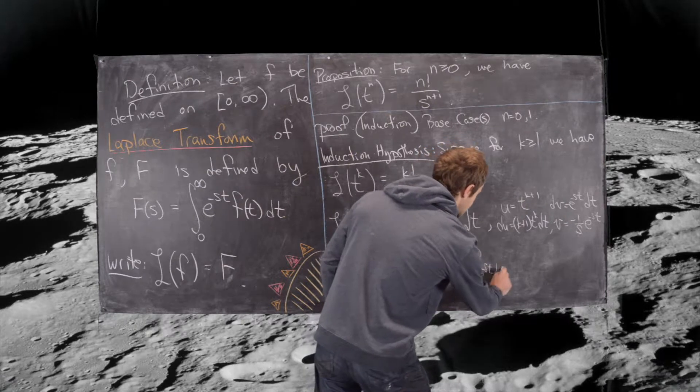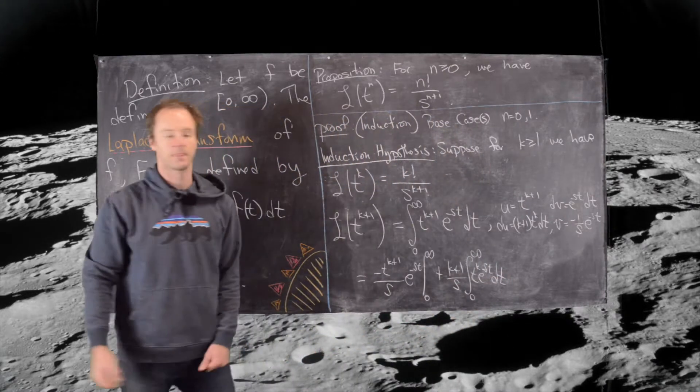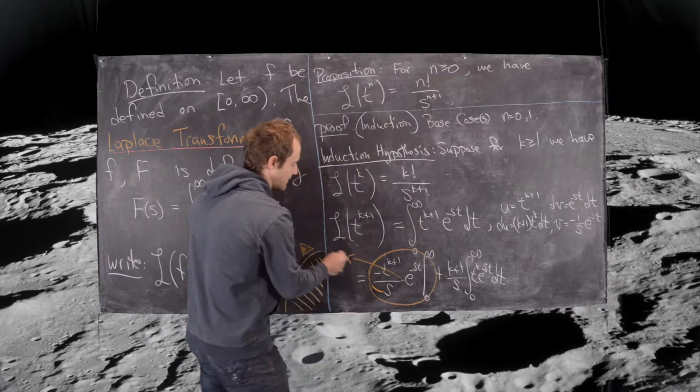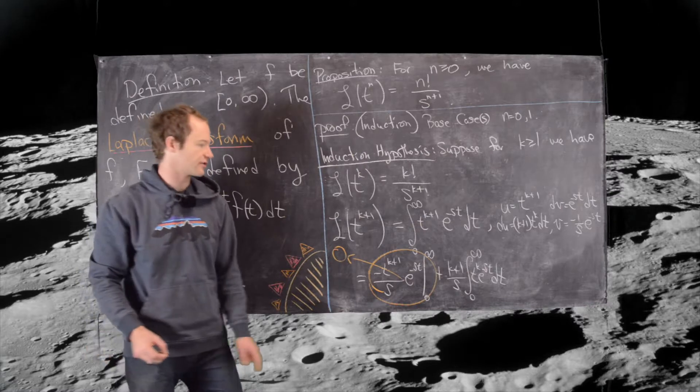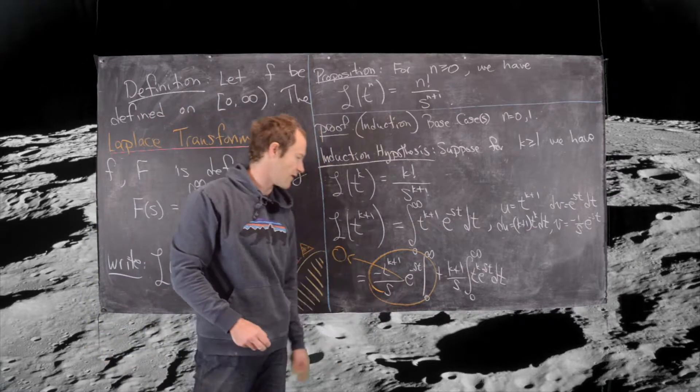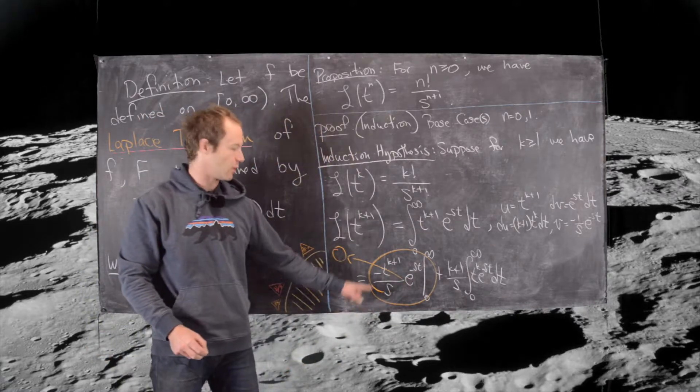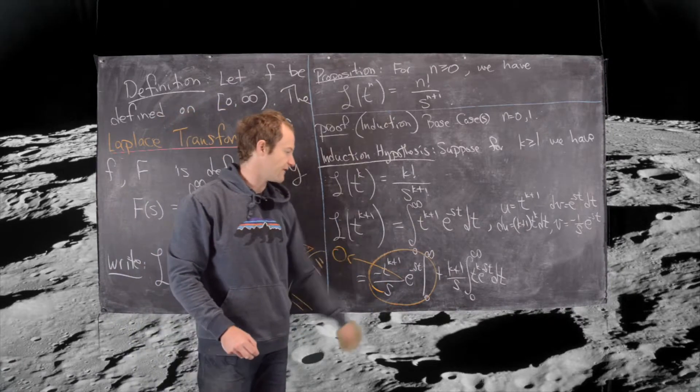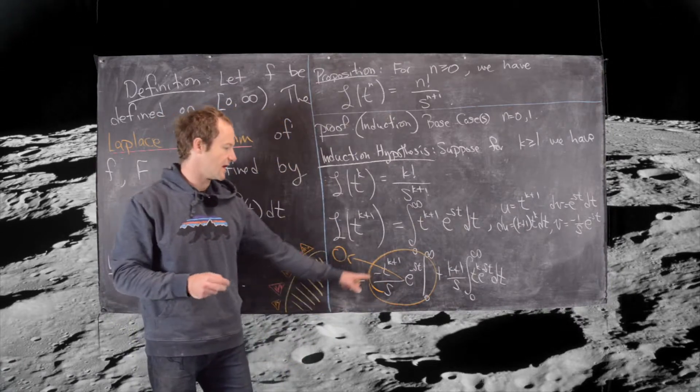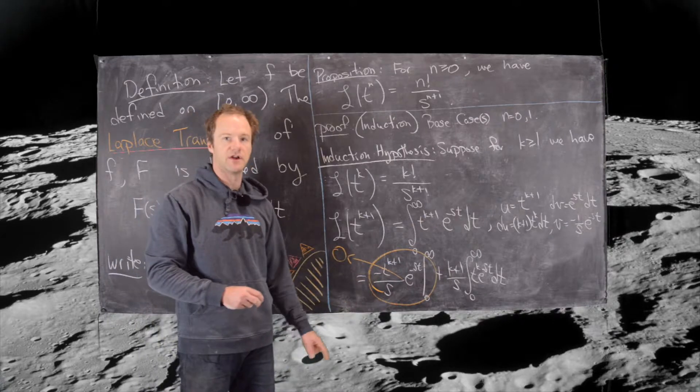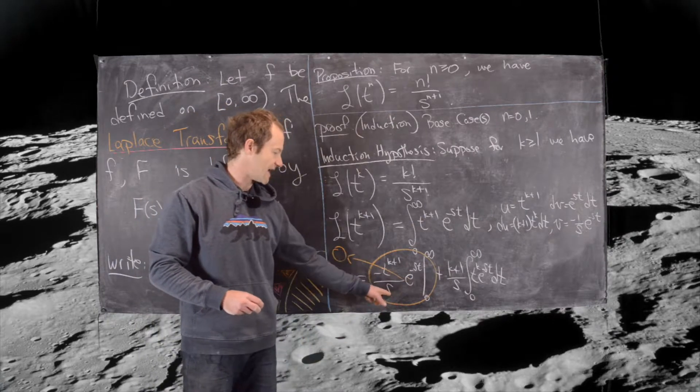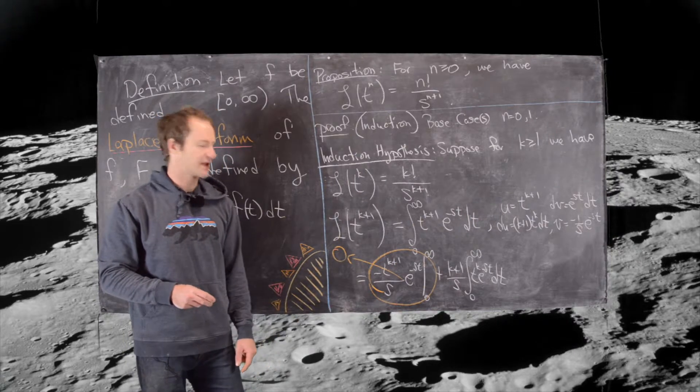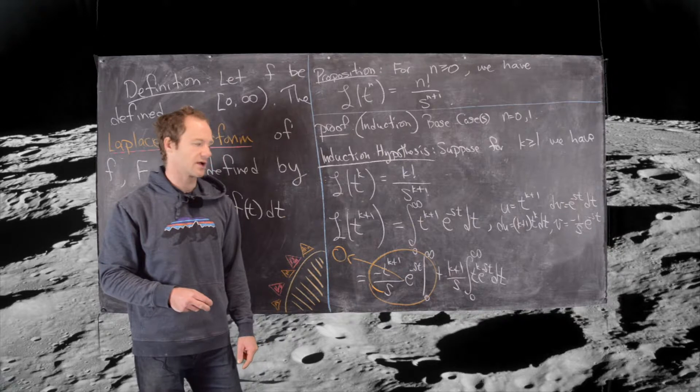Okay good, but now we notice that all of this is going to go to 0, again by calculus 2. If you plug 0 in, obviously the exponential part is 1 and the t part is 0. If you plug infinity in, it's like taking a limit where you have t to the k plus 1 in the numerator and e to the st in the denominator, but the exponential is going to win by repeated applications of l'Hôpital's rule, so that's all going to go to 0.